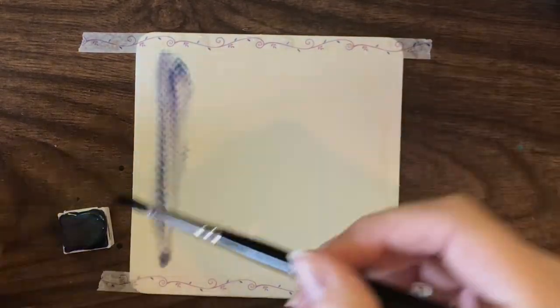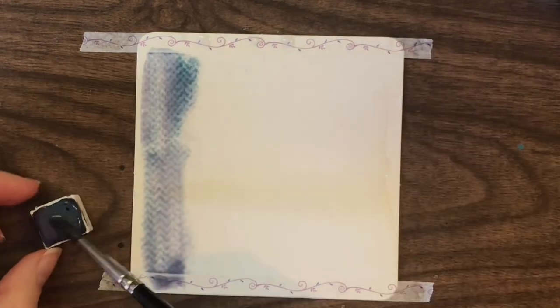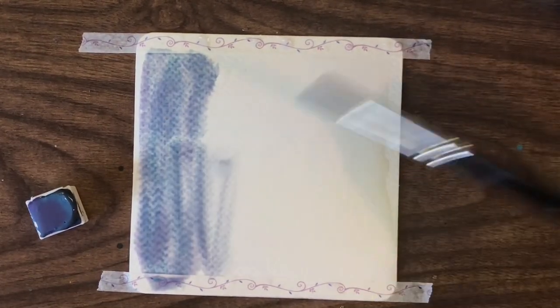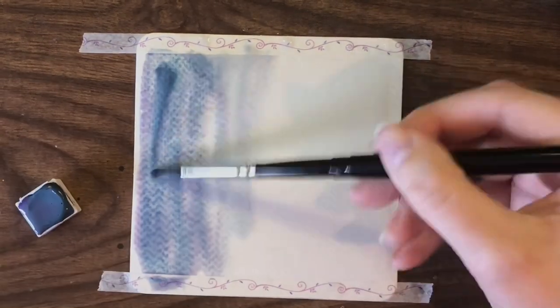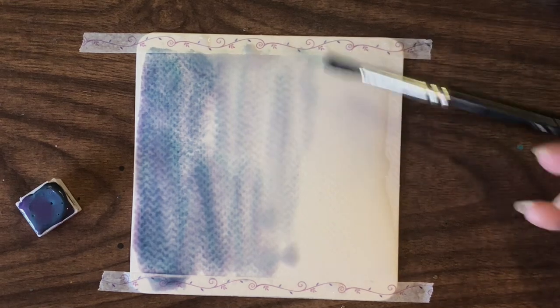It is sort of a mix of Daniel Smith cobalt teal blue and a really stunning purple. It almost reminds me of Cospaint's Viola, if it was more purple and less blue.